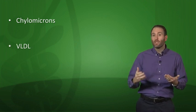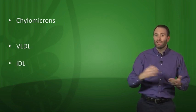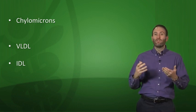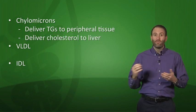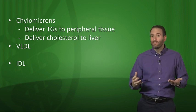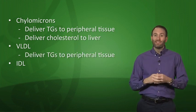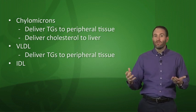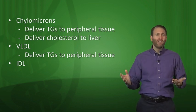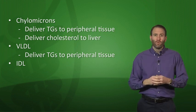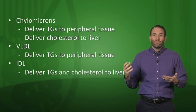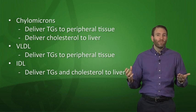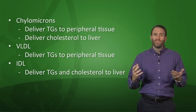There are also chylomicrons, VLDL (very low density lipoproteins), and IDL (intermediate density lipoproteins). Chylomicrons deliver dietary triglycerides to peripheral tissues and deliver cholesterol to the liver as chylomicron remnants. VLDL delivers triglycerides to peripheral tissue and is secreted by the liver. IDL is a byproduct formed when VLDL is degraded in the serum and delivers some triglycerides and cholesterol to the liver.